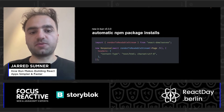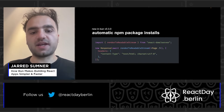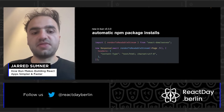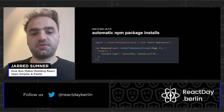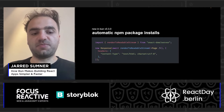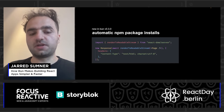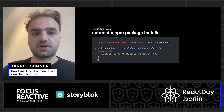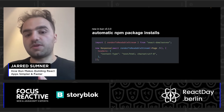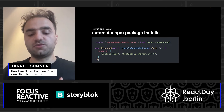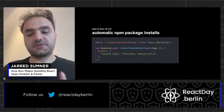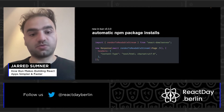In Bun v0.3.0, we added automatic NPM package installs to Bun's JavaScript runtime. That means you can just import packages and they install — you don't have to actually run an install step. This is automatically enabled when there is no node_modules folder, so it still works with node_modules. It just means when you don't have node_modules, if you have a quick script you just want to run and you don't want to deal with installing packages, it just works.